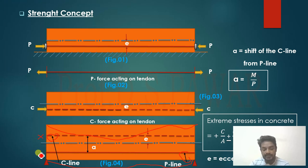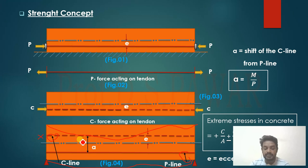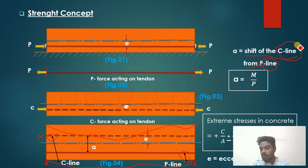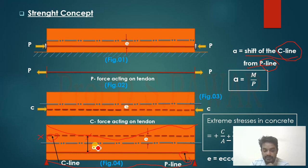The P-line is the tendon line and it remains the same. But the C-line — the concrete force line — is going to change. The distance through which the C-line changes is called 'a', and that 'a' is called the shift of line C from the P-line. This value 'a' is obtained from the formula: a = M / P, where M is the moment on the beam (e.g., from self-weight: wL²/8) and P is the prestressing force.